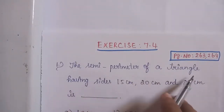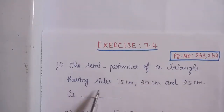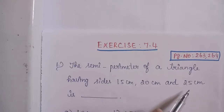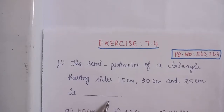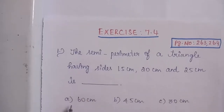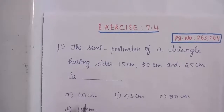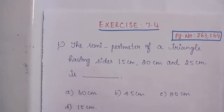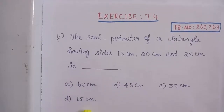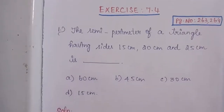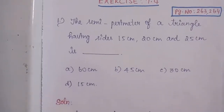First Question: The semi-perimeter of a triangle having sides 15 cm, 20 cm, and 25 cm is dash. Option A: 60 cm. Option B: 45 cm. Option C: 30 cm. Option D: 15 cm.